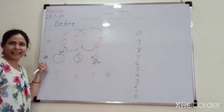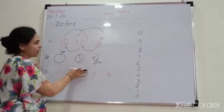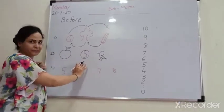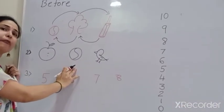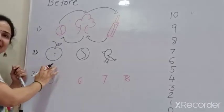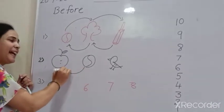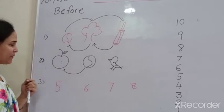Now, second line. If I ask you, there is a picture of ball. So, before ball, what is there, kids? Yes, there is a picture of what comes after.